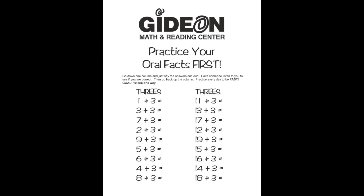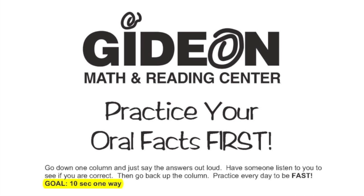Practice every day to be fast. Your goal is to say the answers one way in 10 seconds or less. Make sure you do both columns.